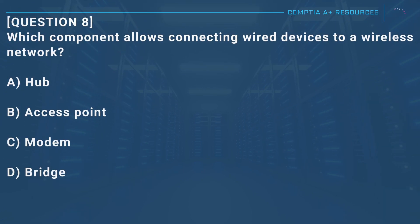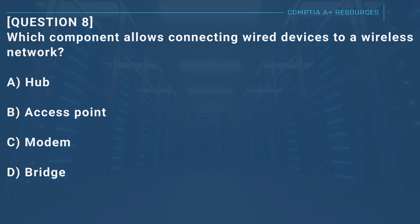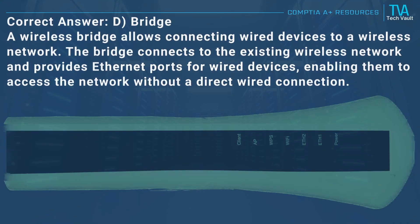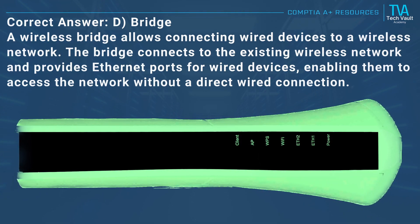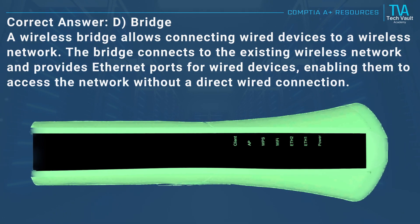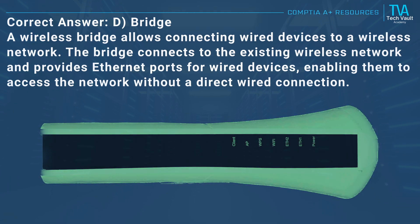Question 8: Which component allows connecting wired devices to a wireless network? A, hub. B, access point. C, modem. D, bridge. Correct answer: D, bridge. A wireless bridge allows connecting wired devices to a wireless network. The bridge connects to the existing wireless network and provides Ethernet ports for wired devices, enabling them to access the network without a direct wired connection.